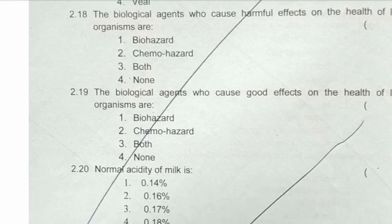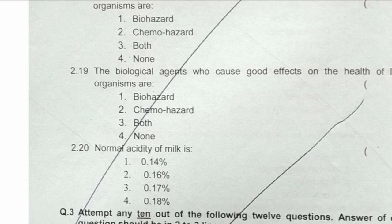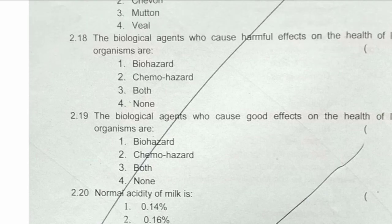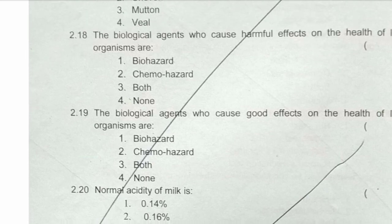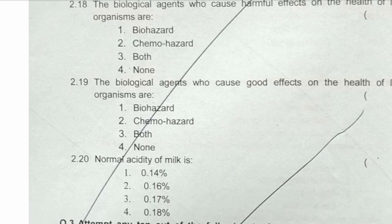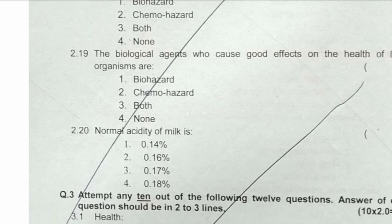Next question: biological agents which cause good effects on the health of living organisms are — the answer is none, because both biohazards and chemo hazards give harmful effects, not good effects. The answer is the fourth option, none.